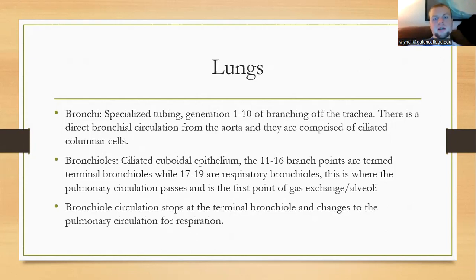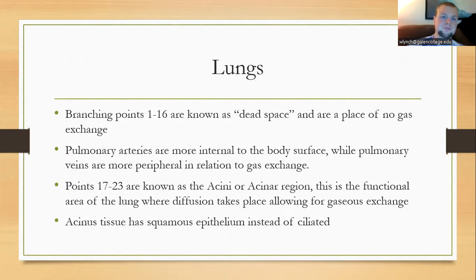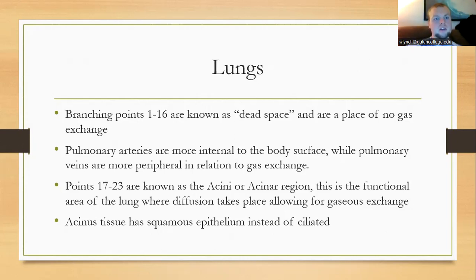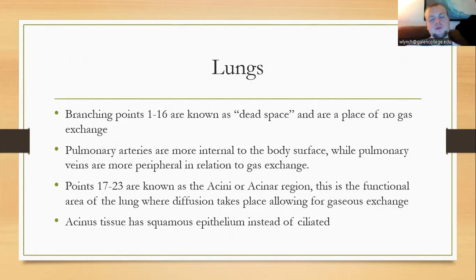Bronchial circulation goes until we hit the terminal bronchiole, then changes to pulmonary circulation. Through the lungs, there is no exchange for the first 16 bifurcations from trachea to alveoli. These first 16 branching points are purely conduction — no gas exchange — so this is called dead space. Points 17 through 23 are known as the acini or acinar region, the functional area where diffusion takes place for exchanging gases between the body and outside environment.